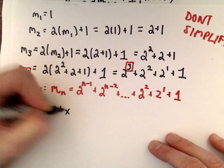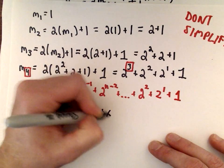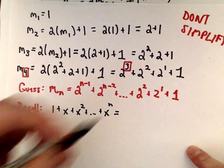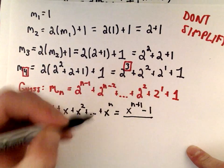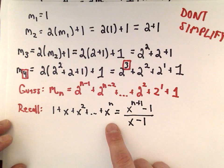If you have 1 plus x to the first plus x squared plus dot dot dot up to x to the power of n, you can rewrite that more compactly by x to the n plus 1 minus 1 over x minus 1. You may have seen this formula when you deal with geometric sequences.